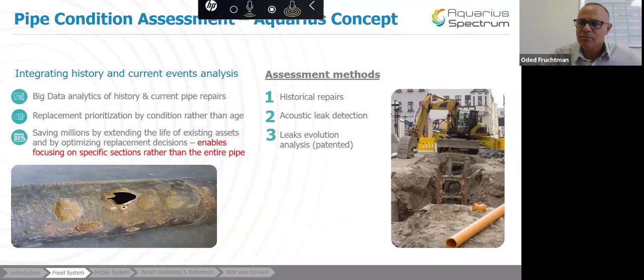And the method that we use is, we do take the history of repairs, anything that the customer can allow us and provide us, along with the acoustic leak detection that we apply on its different parameters, and the leak evolution analysis, which is unique to our system. We can actually monitor and track down the growth rate of a leak. A lot of the leaks would stay constant. The hole would not evolve. But in some, if the condition of the pipe is in poor condition, you would see that the hole size is growing very very fast. And I'll show you a couple of examples.